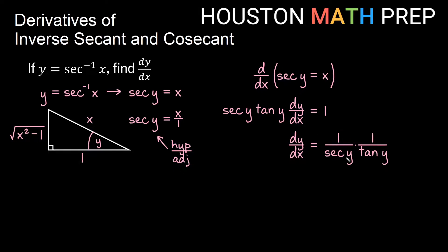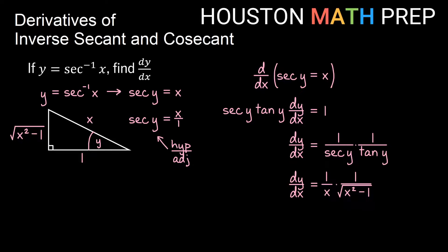The reciprocal of secant y: we said secant of y was x over 1, so the reciprocal is 1 over x. For the reciprocal of tangent, tangent is opposite over adjacent, so the reciprocal is adjacent over opposite. Adjacent is 1 and opposite is the square root of x squared minus 1, giving us times 1 over the square root of x squared minus 1.